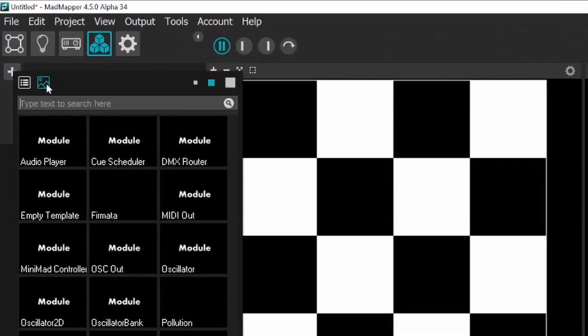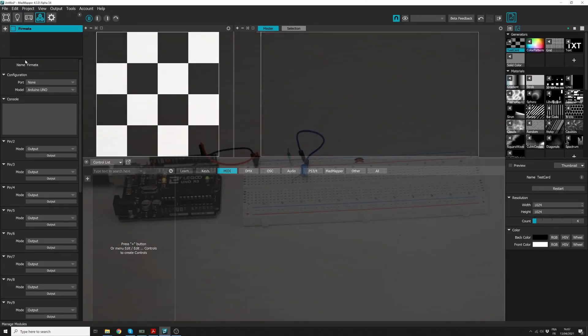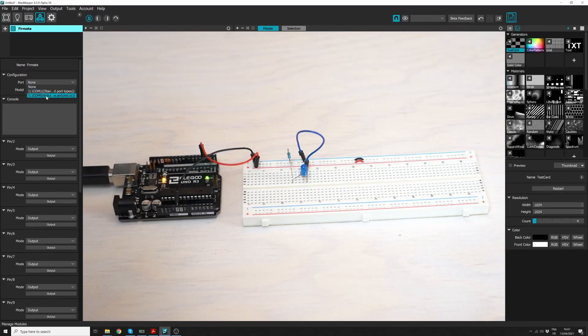Now, in MadMapper, go to the module tab and search for the Firmata module. Select the port of your connected board. Select the correct model, here the Arduino UNO.